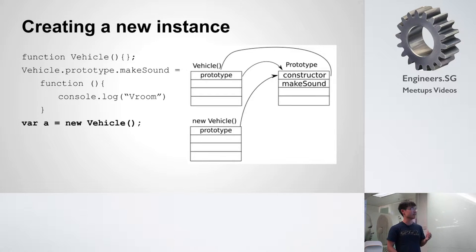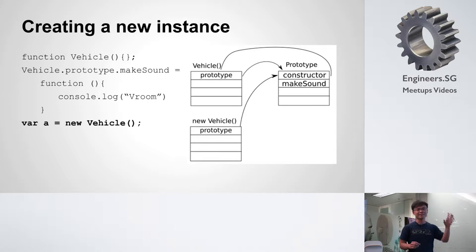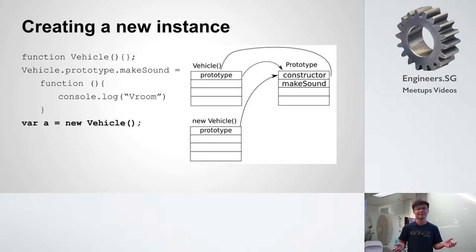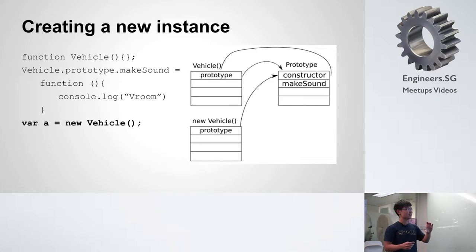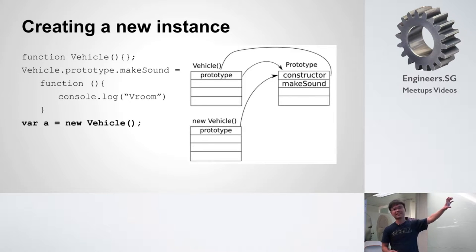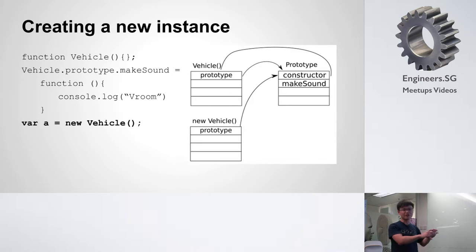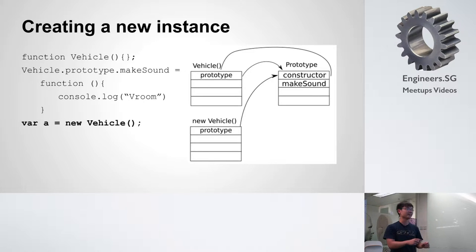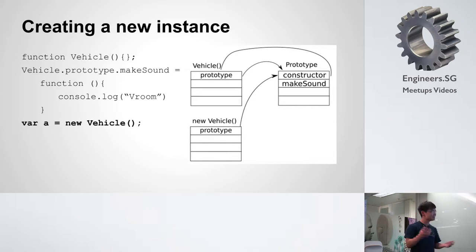So what happens when we create a new instance? When you do "new vehicle," it's kind of like a class-based language where you create a new instance. In JavaScript, what happens is you create a new object whose prototype points to your function definition. When you do "new vehicle," you create a new object where the prototype points to the prototype of the first vehicle. So now in new vehicle, you have "make sound" because it has a reference to that function — that's how you do prototypical inheritance.